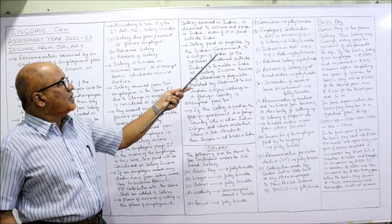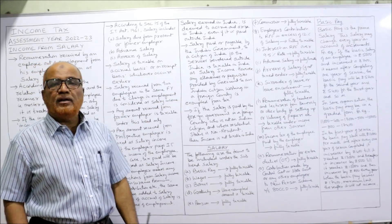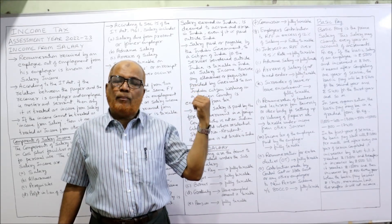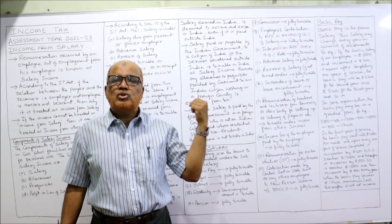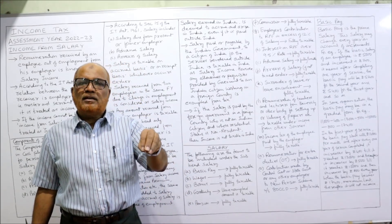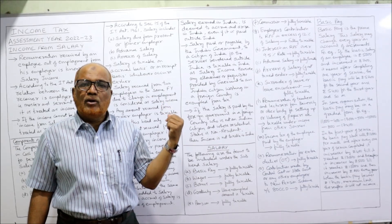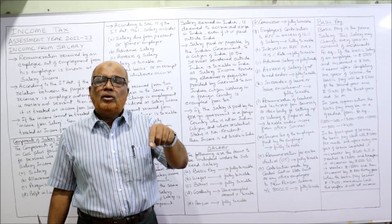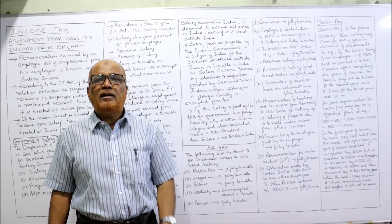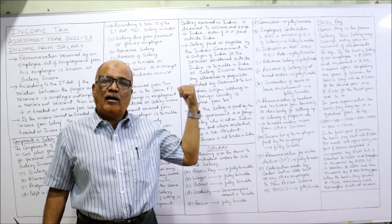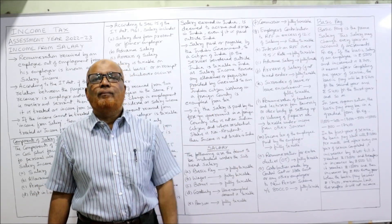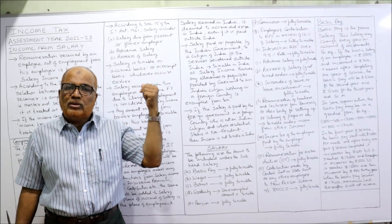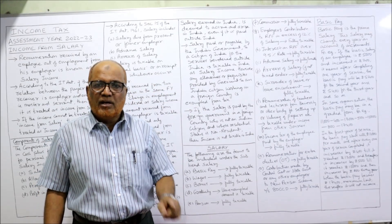Salary paid or payable by the Indian government to a citizen of India for services rendered outside India is also taxable. For example, Indian citizens appointed by the Government of India and posted abroad as ambassadors — say, the Indian embassy working in the USA. The Indian government appointed an Indian citizen as ambassador; whatever salary paid to that ambassador is accrued in India and is taxable in India. However, if any allowances or perquisites are given to that person working abroad, those are exempted from tax.